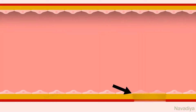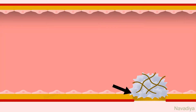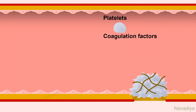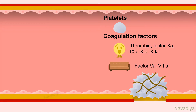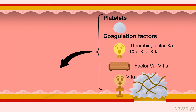We have seen that any break in a blood vessel is sealed by formation of a clot. During this process, platelets and various coagulation factors like thrombin, factor 10, 9, 11, 12, factor 5 and 8, and factor 7 are activated. Now, if these activated platelets and coagulation factors spread into the healthy undamaged area, they might start unnecessary clot formation over there.